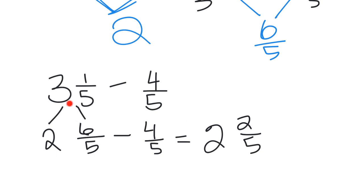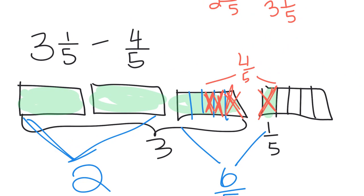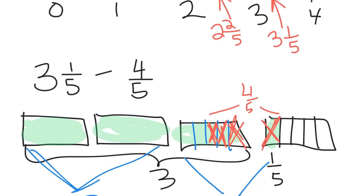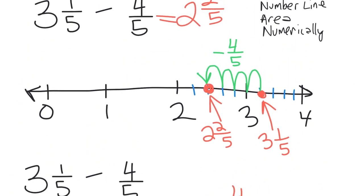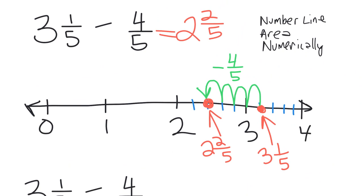So we've got three ways of representing this same problem: numerically, using the area model, or using the number line. So let's do one more example.